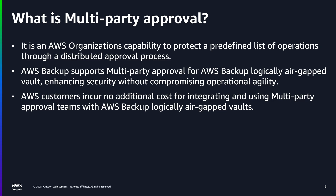Multi-Party Approval is a capability of AWS Organizations that allows you to protect a predefined list of operations through a distributed approval process. Using Multi-Party Approval, you can establish organizational approval workflows and transform security processes into team-based decisions. AWS Backup supports Multi-Party Approval for AWS Backup Logically Air Gap Vaults to further enhance your organizational security without compromising operational agility.